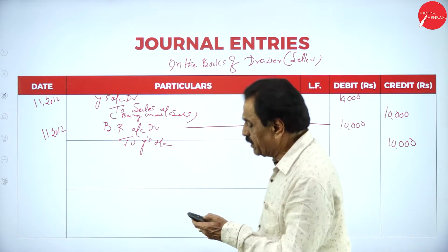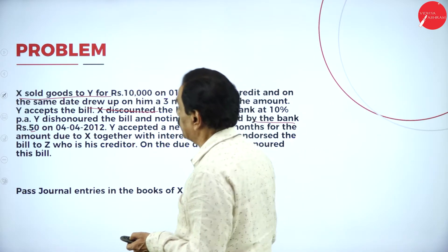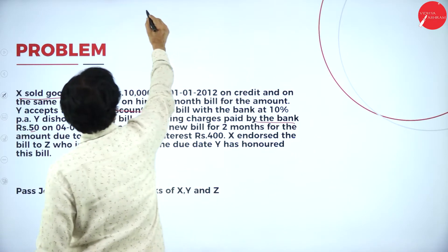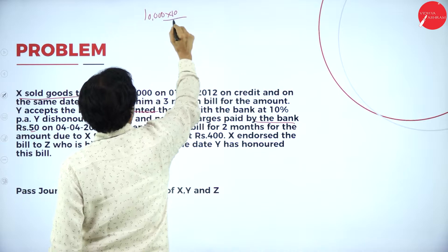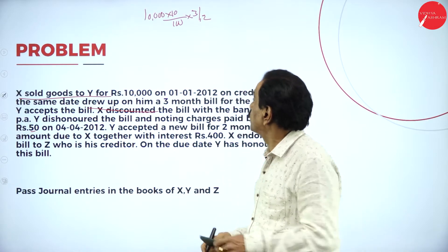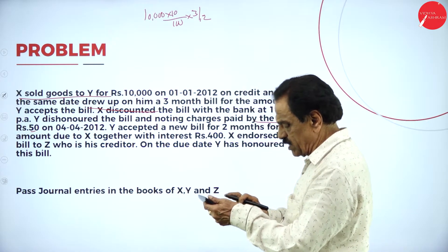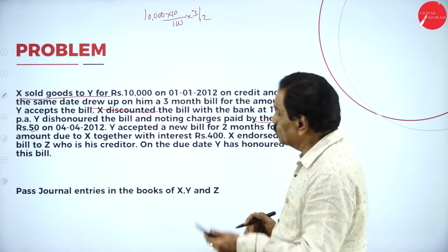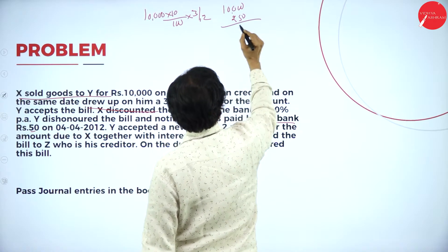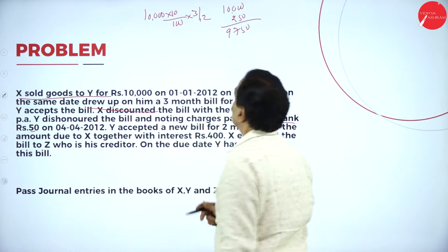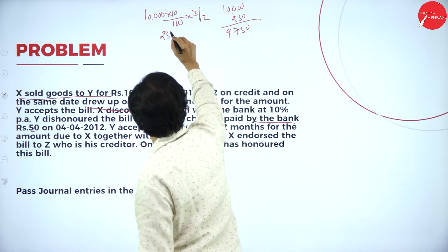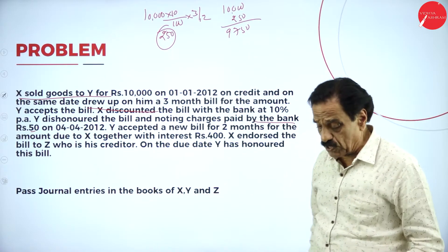3-month bill. Y accepts the bill. X discounts the bill with the banker at 10%. So the bill is 10,000. 10% is 10/100 into 3/12. So 10,000 into 10/100 is 1,000 into 3/12 = 250. So 10,000 minus 250 means he is receiving 9,750. What is the amount of the bill? 10,000. 10% for 3 months, discount is 250. So he is receiving 9,750.